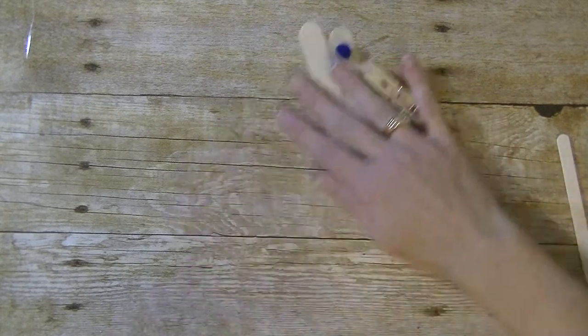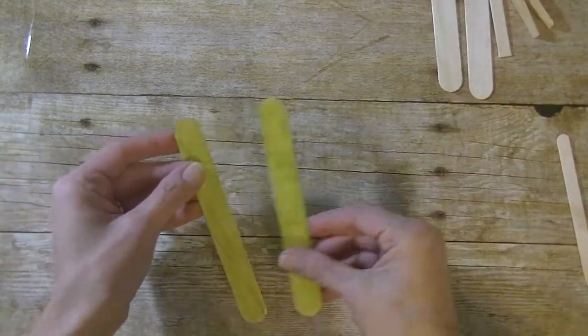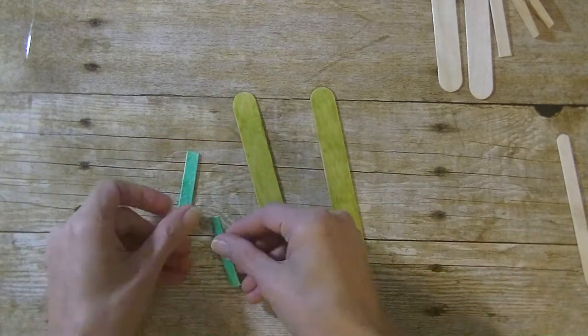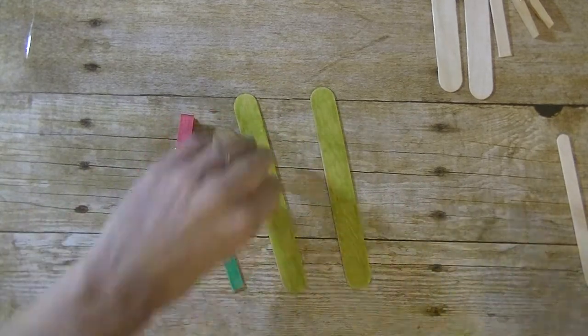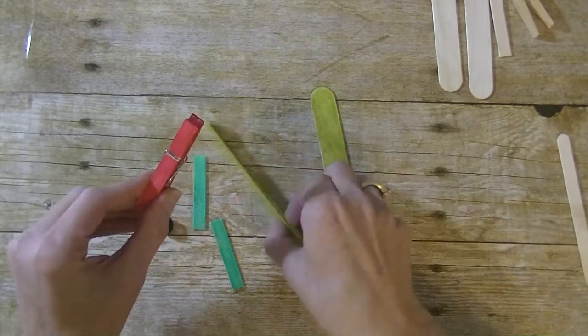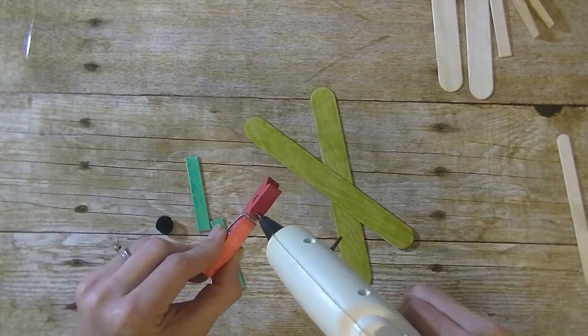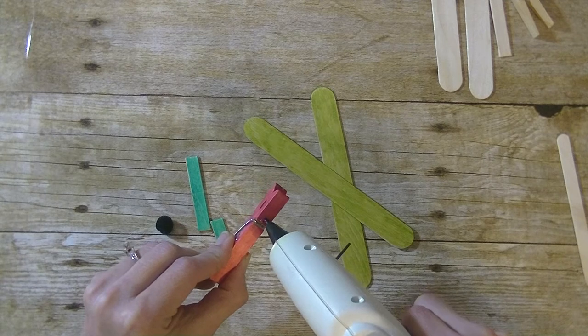When the kids are done coloring them - in this one I went ahead and used markers, you can see they're all colored here - you're going to take your clothespin and your jumbo size craft stick. I'm using a glue gun because it is quicker on video, but you can certainly use a craft glue or a tacky kind of glue.